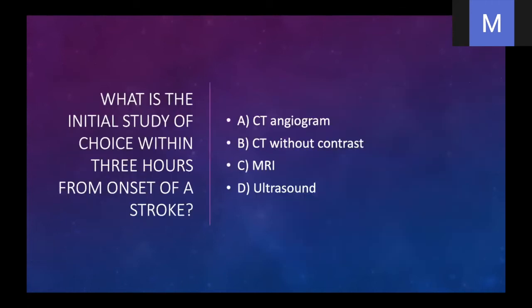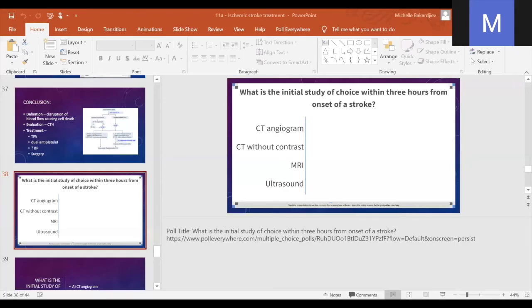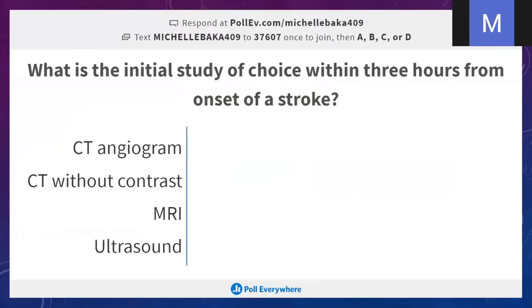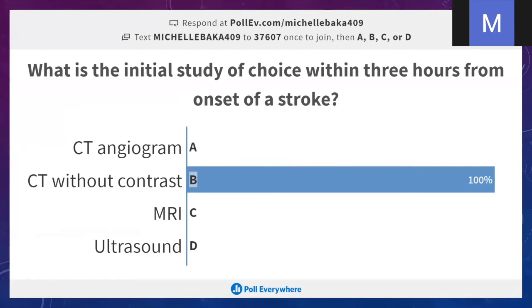Let's do some interactive questions. The initial study of choice within three hours from onset of stroke — what would be the best study? Everyone did an awesome job. The CT without contrast is your study of choice — that would be B. TPA has the best results if given within how many hours from onset according to the NINDS trial? The ECAS trial showed the three to four-and-a-half hour window, but one of the recurring themes is the best results come from giving it sooner. Within two hours you're better off — so it's two hours for that one. And as far as giving TPA, what should the blood pressure systolic be under? Most people got the right answer there.